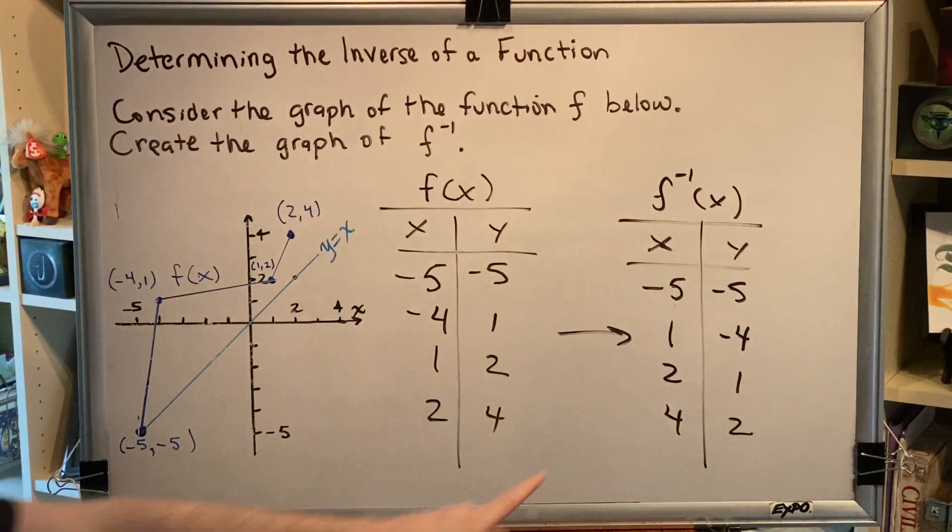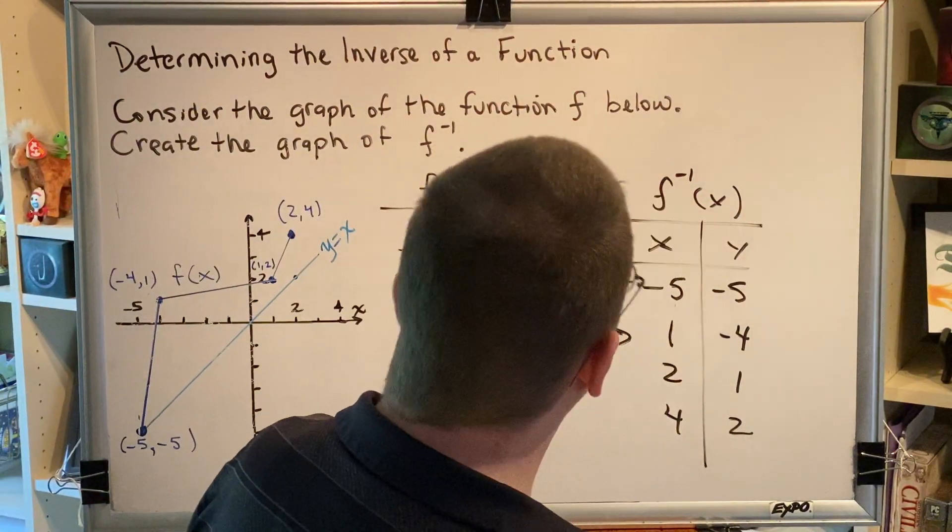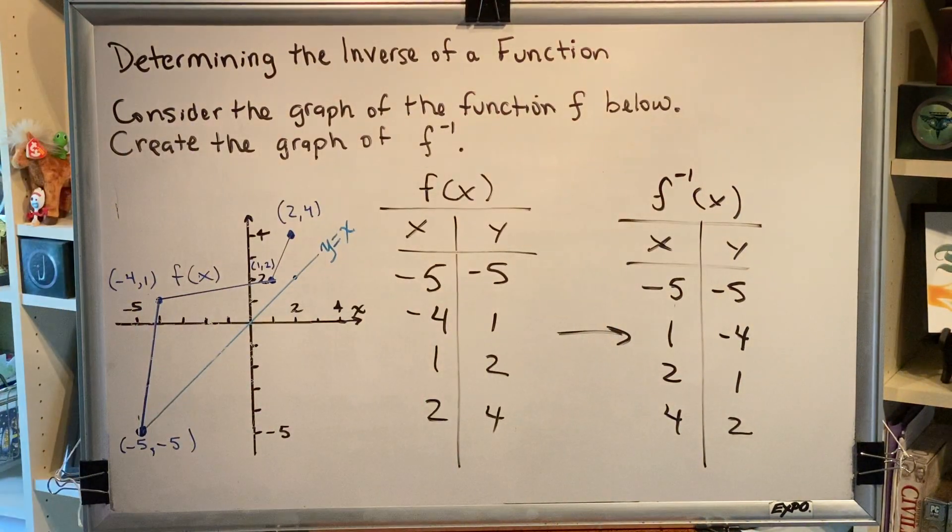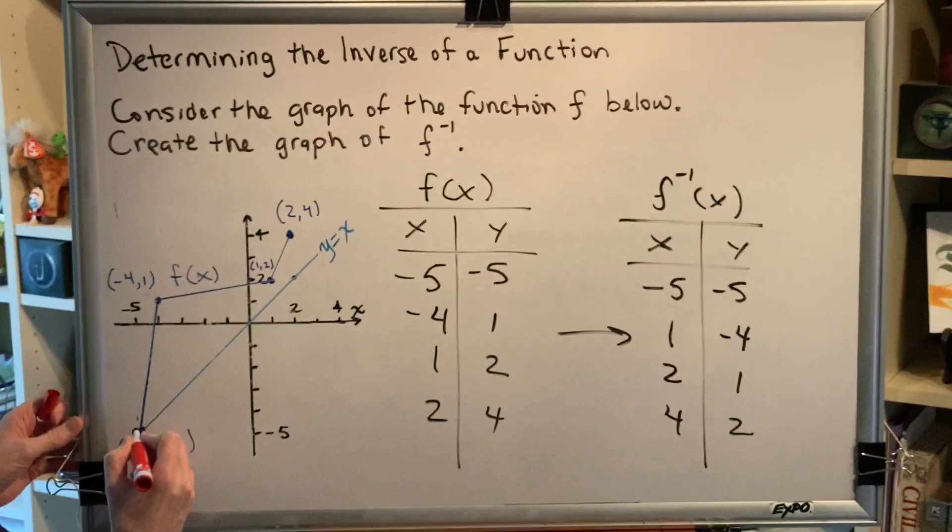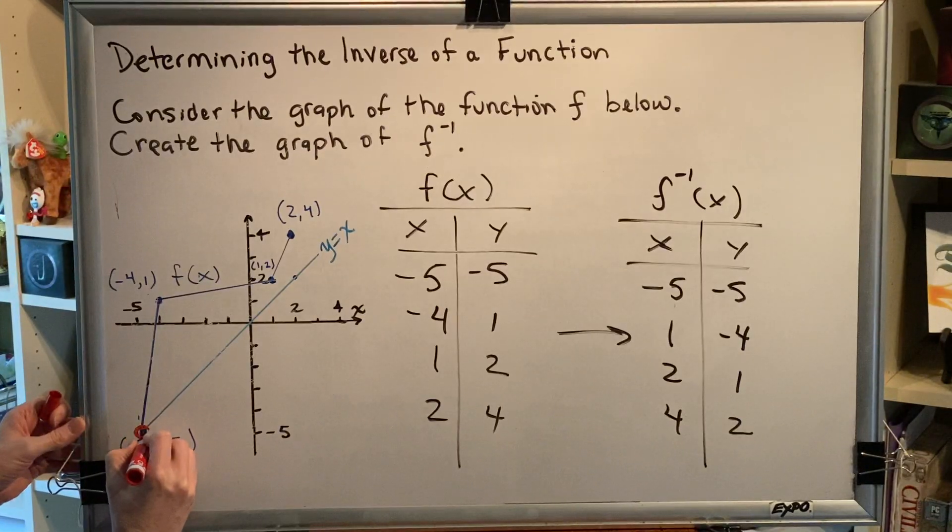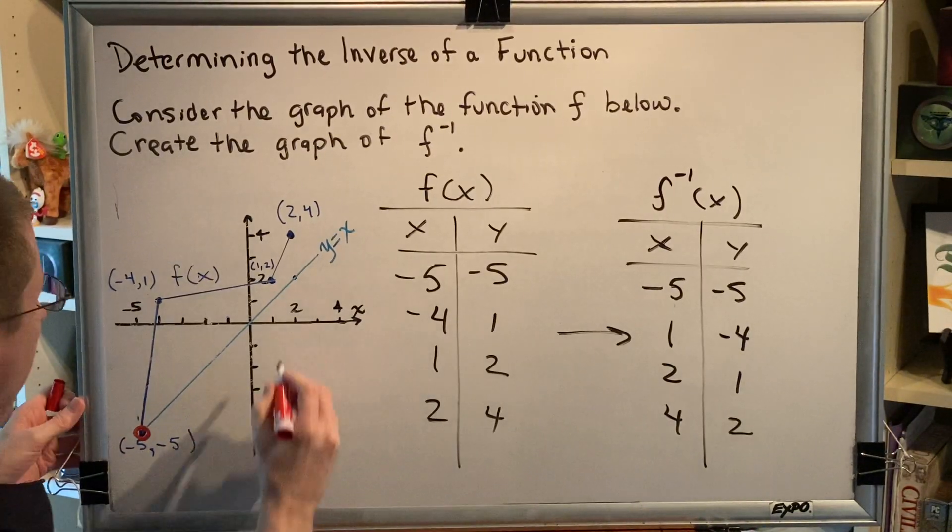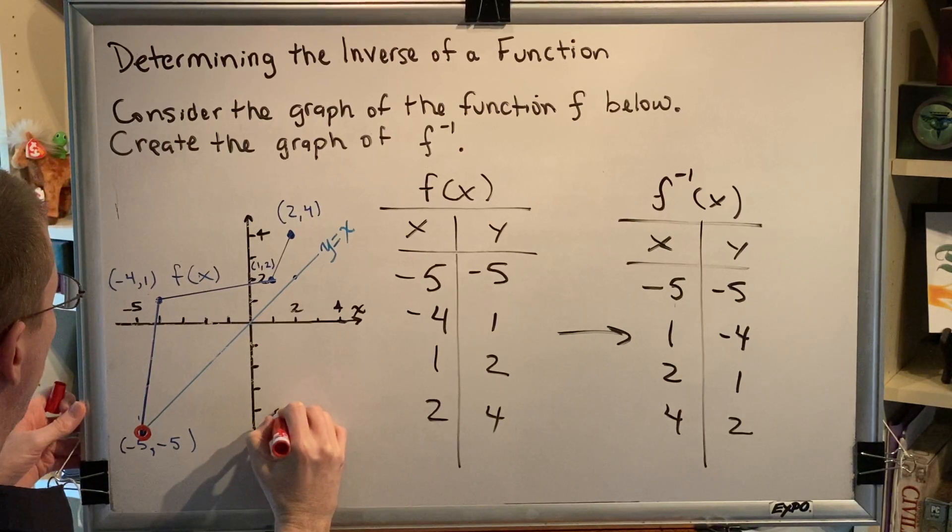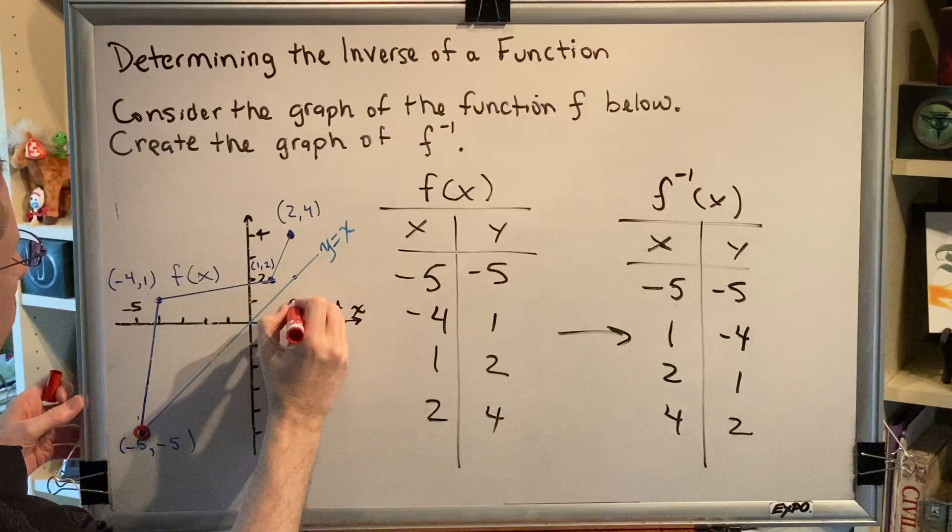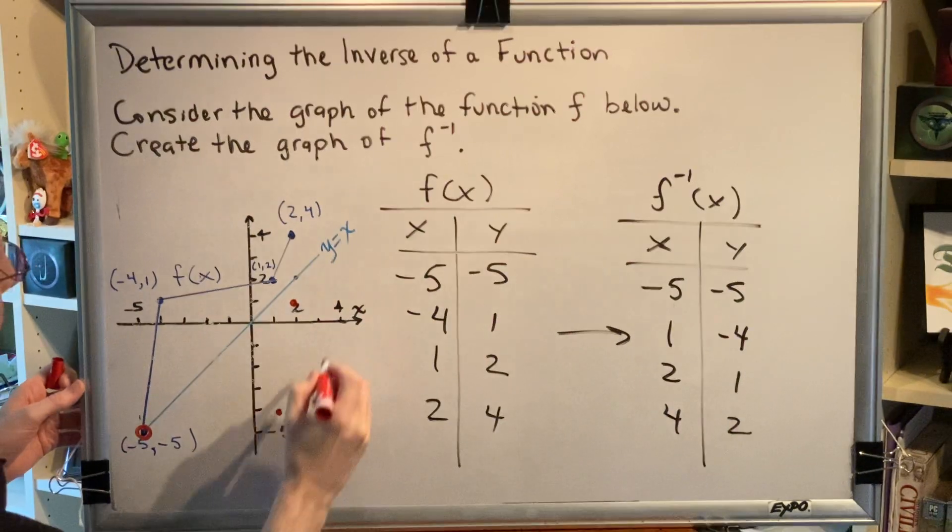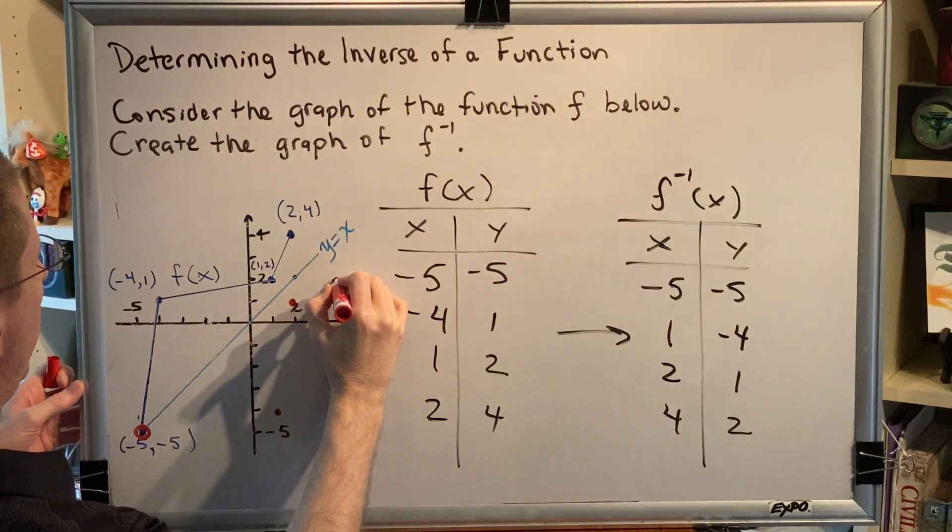So now we know four points that are on the graph of f inverse of x. Let's plot them. Negative 5, negative 5 is shown here. 1, negative 4 would be here. 2, 1 would be here. And 4, 2 would be here.